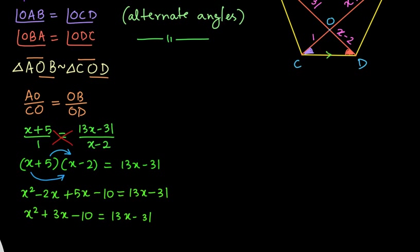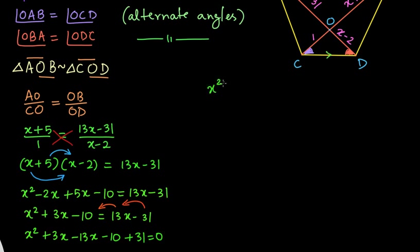Now we will bring the terms from the right-hand side to the left-hand side. Bringing 13X over gives minus 13X, and bringing minus 31 over gives plus 31. So we have X squared plus 3X minus 13X minus 10 plus 31 equals 0, which simplifies to X squared minus 10X plus 21 equals 0.